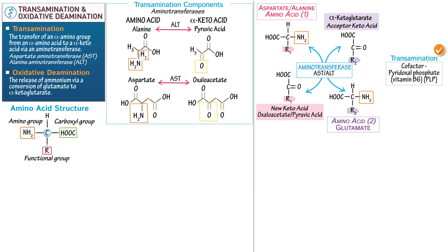Pyridoxal phosphate, also referred to as PLP or vitamin B6, is a necessary cofactor for transamination reactions.